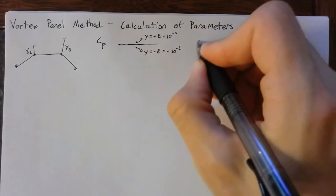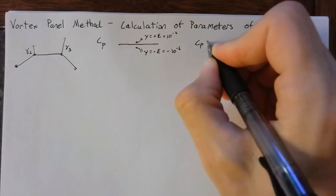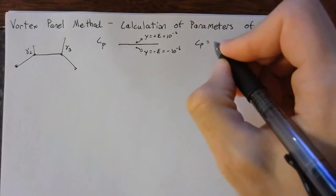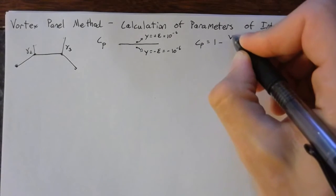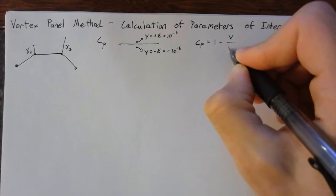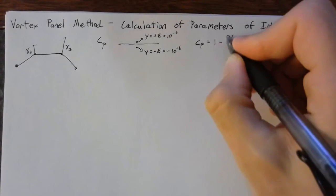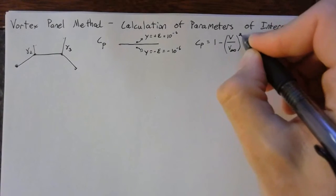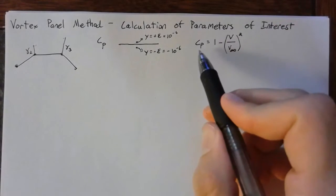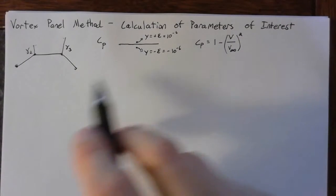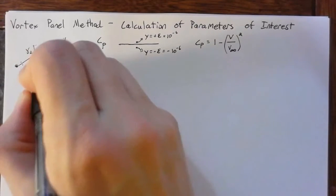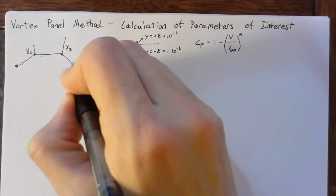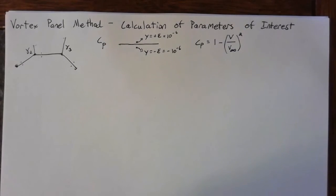And whenever you're actually calculating Cp, remember that the formula for that is simply 1 minus the velocity over the infinity squared. And this is just true at every point. So you can sample a whole bunch of points above and below the surface, and then create a plot of the Cp in that manner.